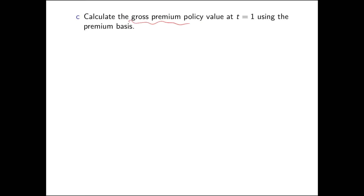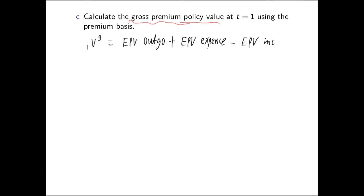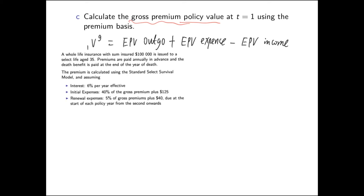In part C, we need the gross premium policy value at time one. Compared with part B, first our premium itself will be different, and also when we consider the policy value, we need to take into account the expenses. So the gross premium policy value is the expected present value of benefit outgo plus the expected present value of expenses, subtract the expected present value of income. The expected present value of the life insurance benefit is 100,000 times the value at time one when this person is age 36.